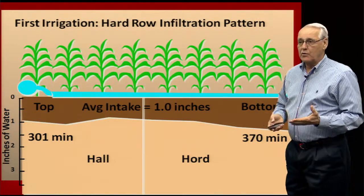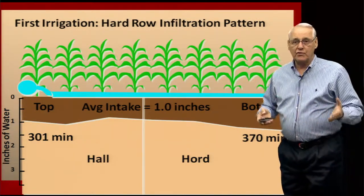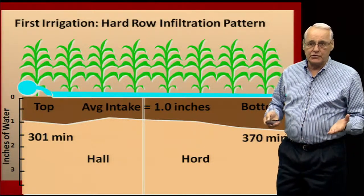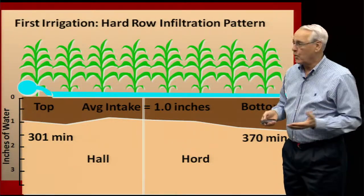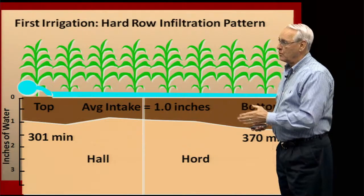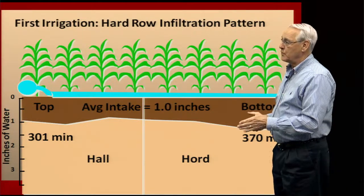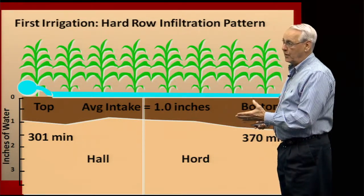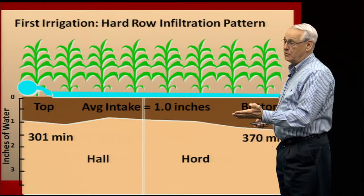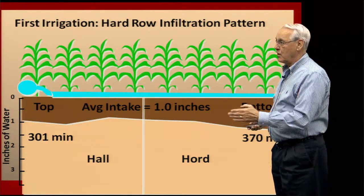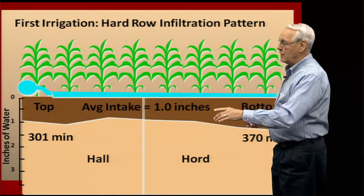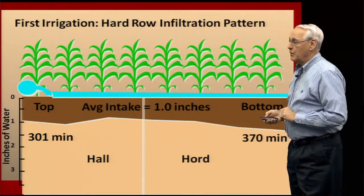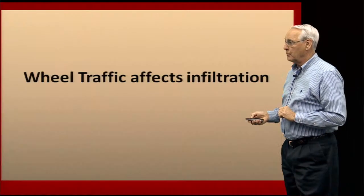In the hard row — the one driven on during planting, tillage, fertilizing, and spraying — during that first irrigation, the intake is significantly less. It's about two and a half times less than in the soft row. And again, that influences the intake difference between the HAL and the HORD.